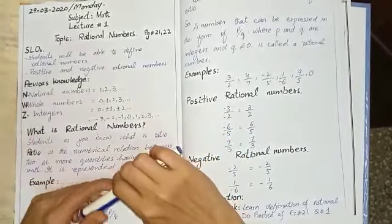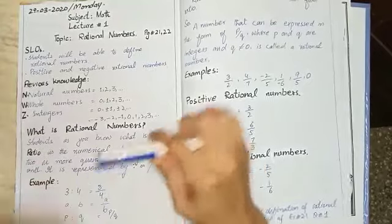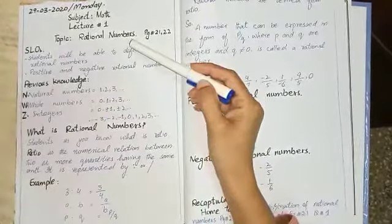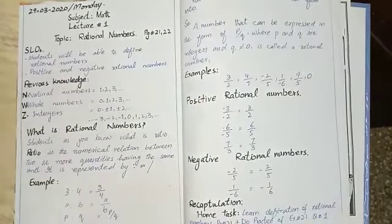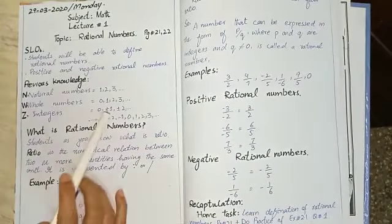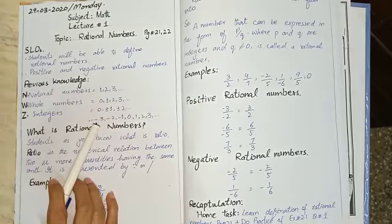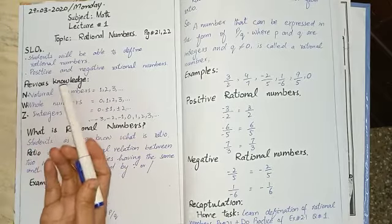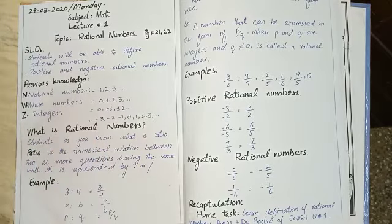Hopefully you all will be fine. This is math lecture number one. Today's topic is rational numbers. This is a very easy topic. I need just your attention. After the examples of this topic, we'll be able to define rational numbers, positive and negative rational numbers.